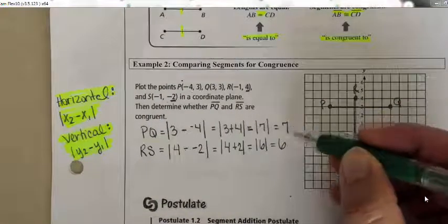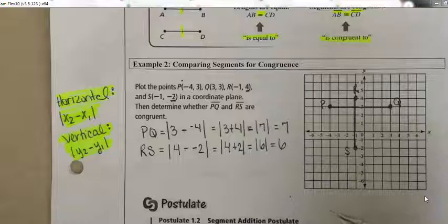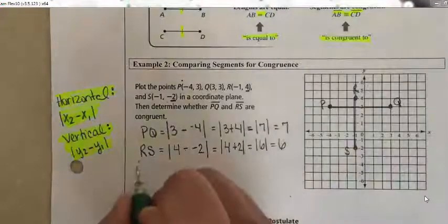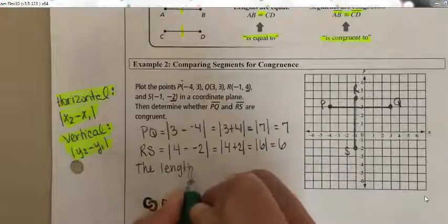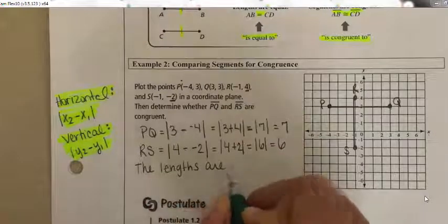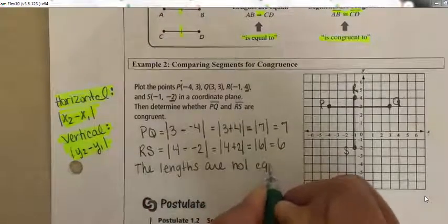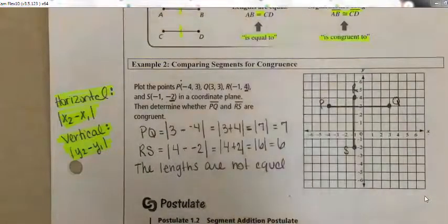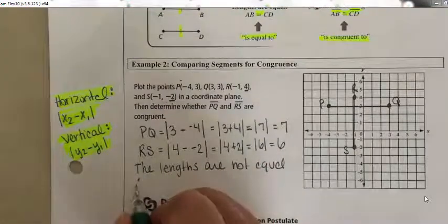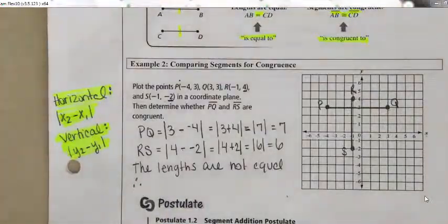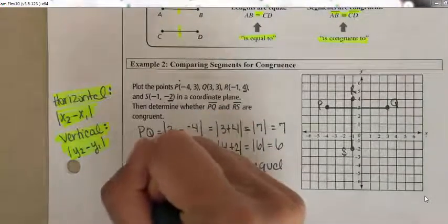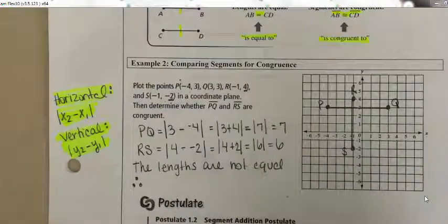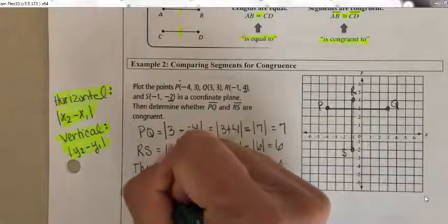Since the lengths are not equal, the segments are not congruent. Therefore — and those three dots mean 'therefore' in math notation — the segments are not congruent. I'll write that using a congruent symbol with a slash through it.